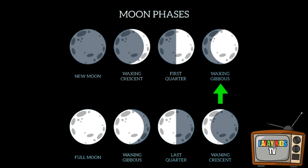Waxing gibbous: more than half of the moon is illuminated and continues growing. Full moon: the entire face of the moon is visible when it is directly opposite the Sun. Waning gibbous: the moon's illumination decreases, but it is still more than half-visible.